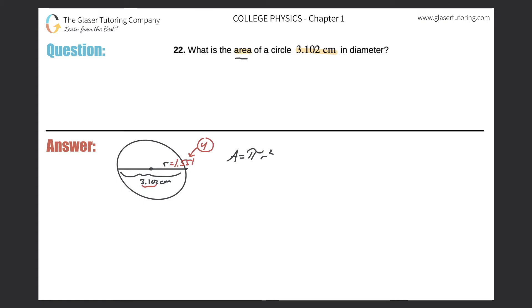Now what I can do is I can use this radius value in my calculation. Okay, so the area will now be equal to pi times the radius, which is 1.551 squared. Okay, so let's calculate it now, right?